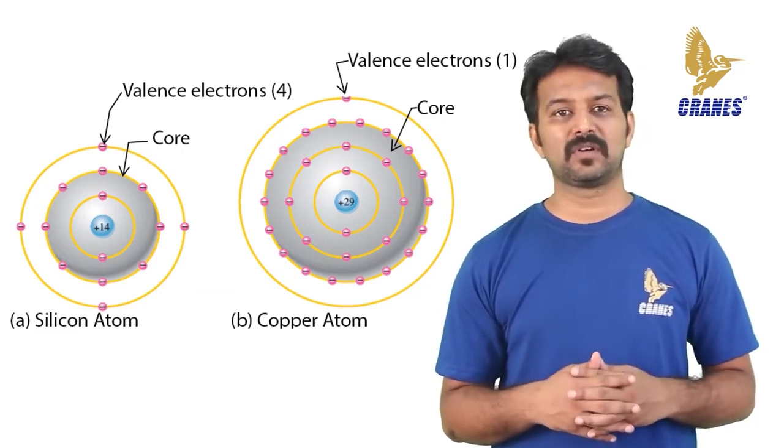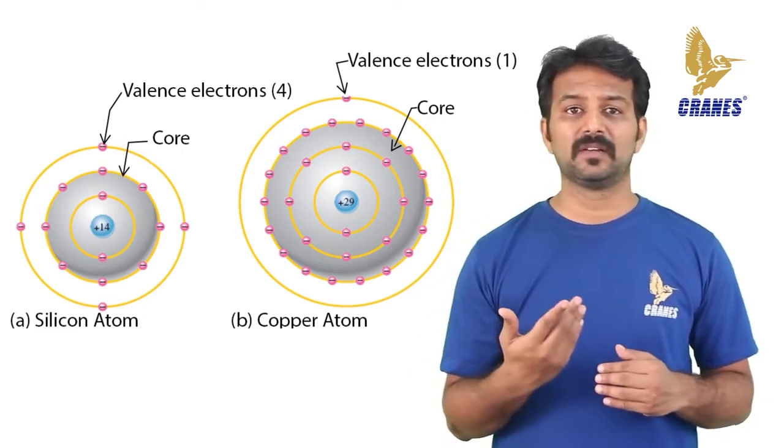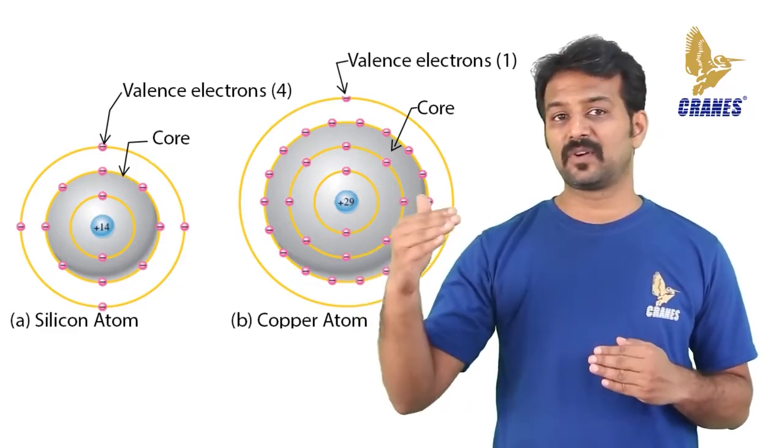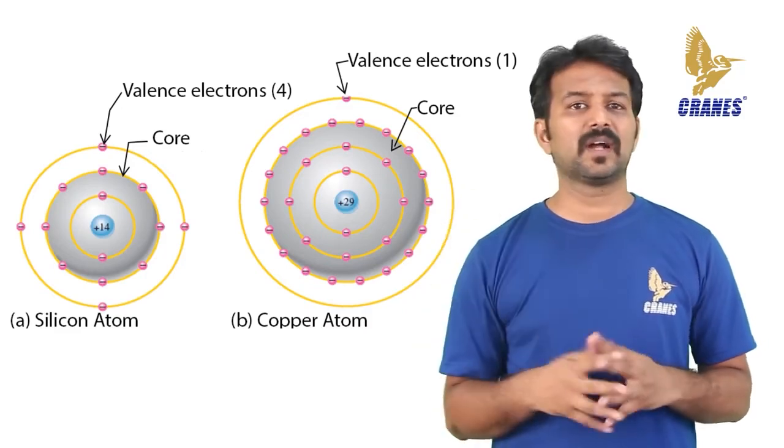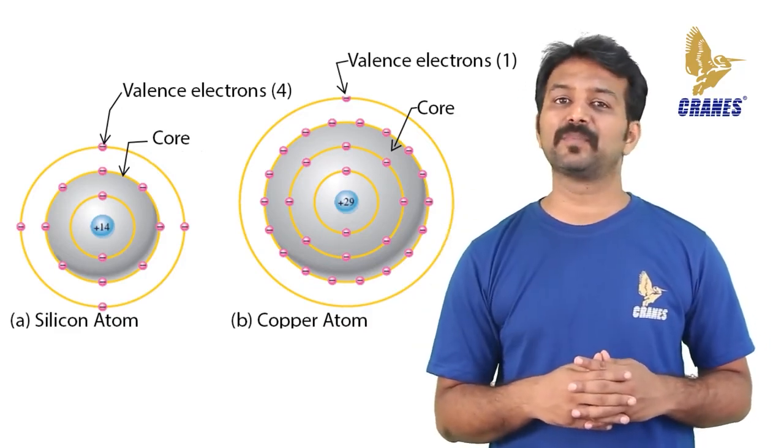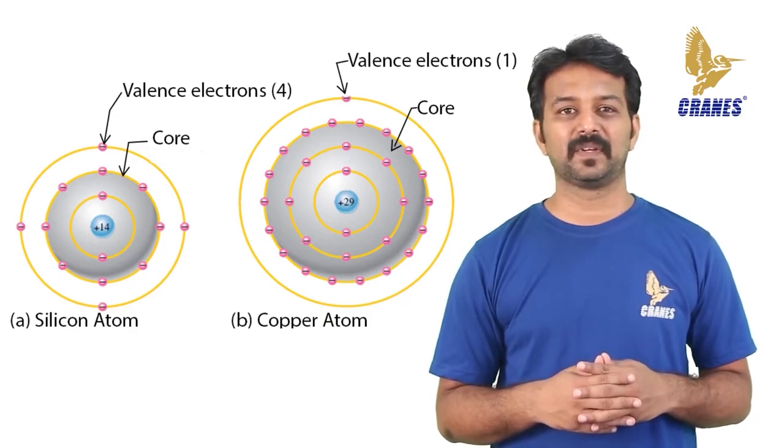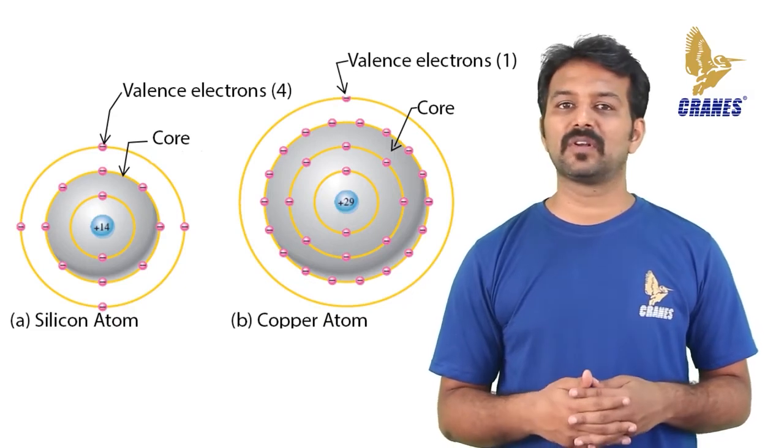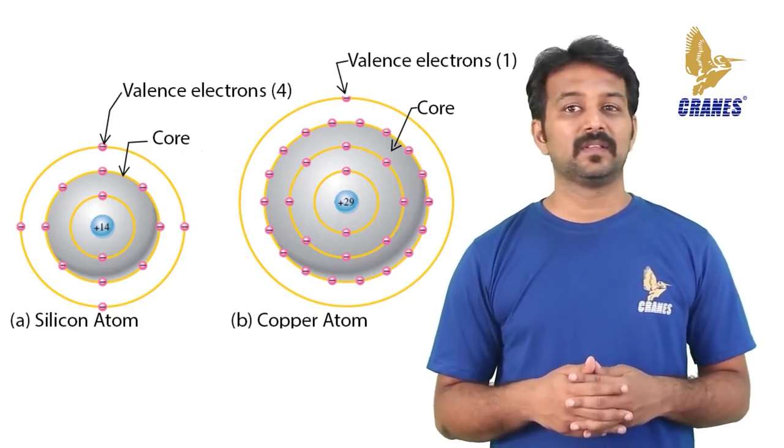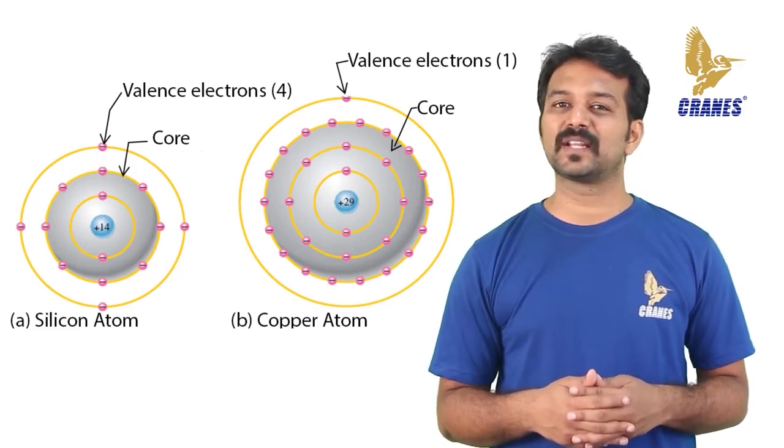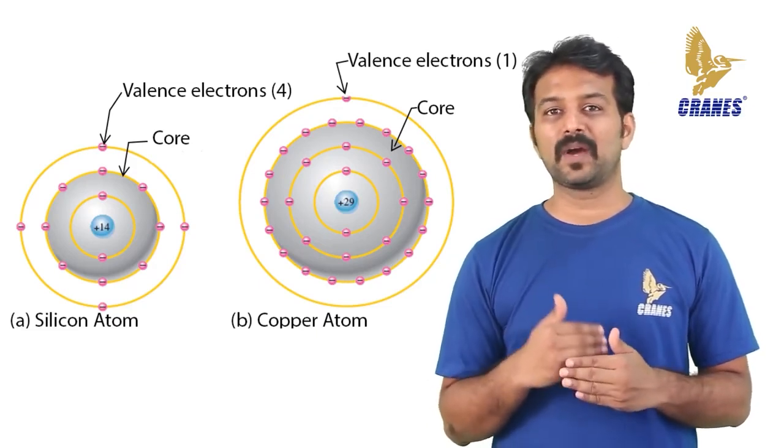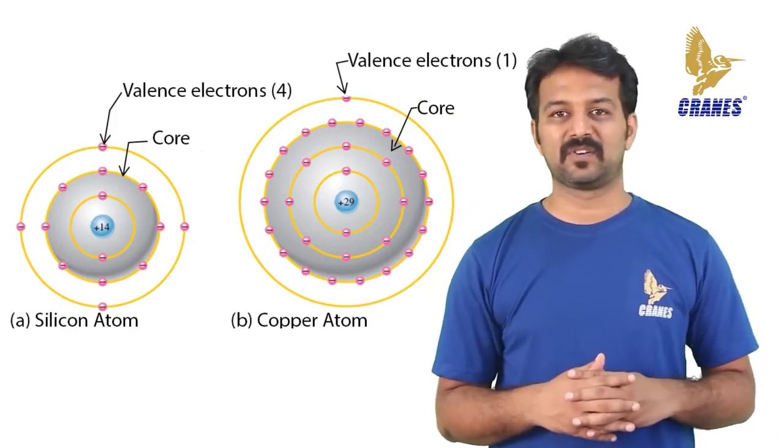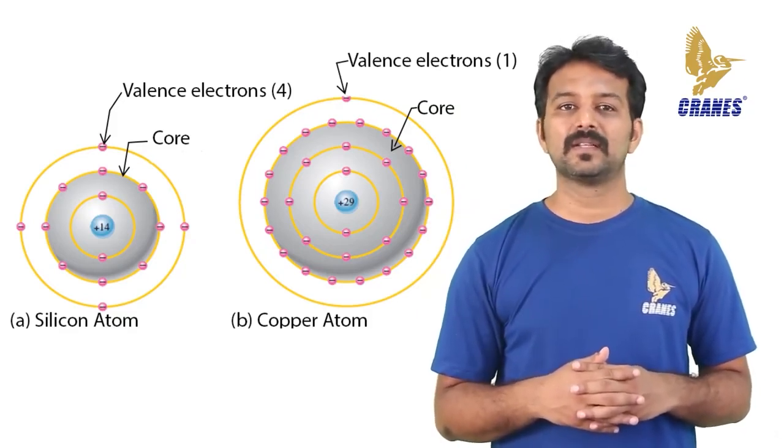The copper's valence electron is in the fourth shell which is at greater distance from its nucleus than the silicon's valence electron in the third shell. Recall that electrons farthest from the nucleus have the most energy. The valence electron in copper has more energy than the valence electron in silicon. This means that it is easier for valence electrons in copper to acquire additional energy to escape from their atoms and become free electrons than in silicon.